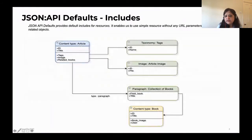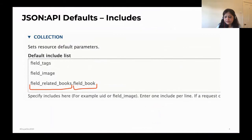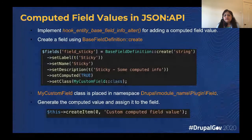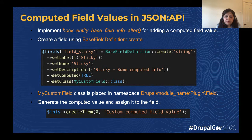Similarly, if you need the relationship for book image, which is a separate relationship for a book, you have to go deeper inside and say you need related_books dot field_book and then field_book_image. This is how we go inside and get the information for all the relationships in our system. Once we do that, we have this compiled response for all the relationships, and we have one flat response for our resource type. But we also have scenarios where we need something which is really not there — computed information — something we need to send in our JSON response which is not directly available.